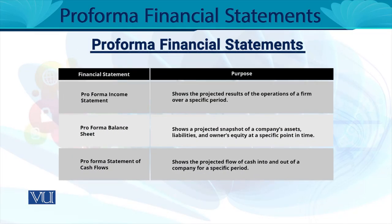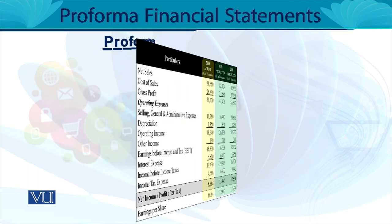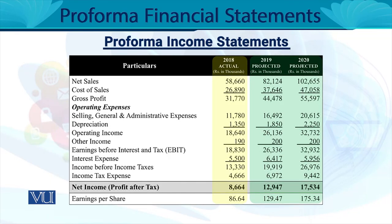Isi tarah teen statements hain jaise humne historical mein dekha tha. Pro forma income statement jo ke aapko projected results dikhati hai — they are not actual figures but they are going to happen in future — projected results of the operations of a firm over a specified period of time. Isi tarah pro forma balance sheet hai jo assets, liabilities aur equity ka projected snapshot dikhati hai, aur pro forma statement of cash flows jo projected cash inflows aur outflows dikhati hai.